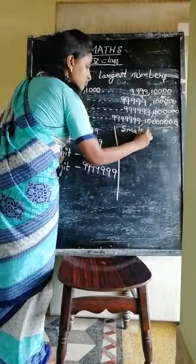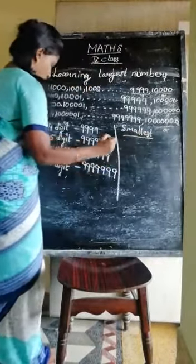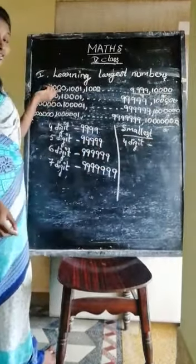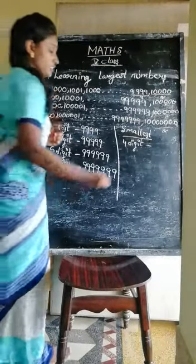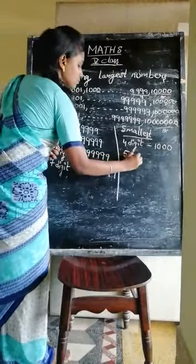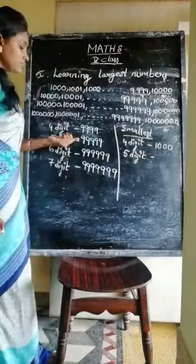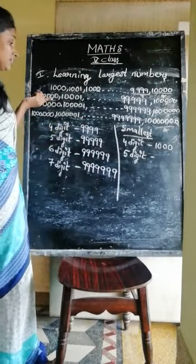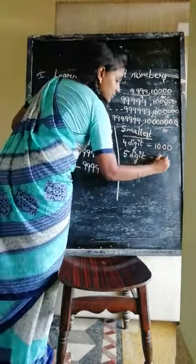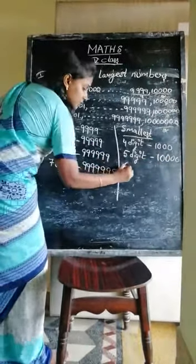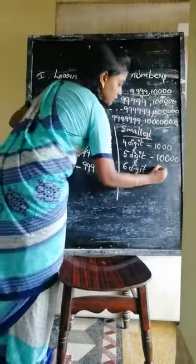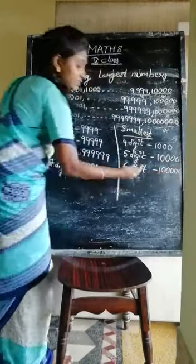Shall we learn the smallest numbers? The 4-digit smallest number is 1000. The 5-digit smallest number: after completing 9,999, the next is 10,000 — so 10,000 is the 5-digit smallest number. The 6-digit smallest number is 1,000,000.